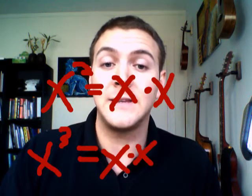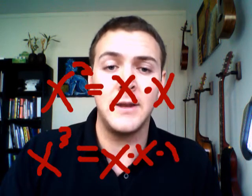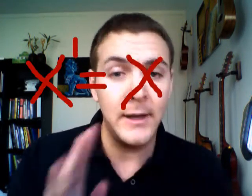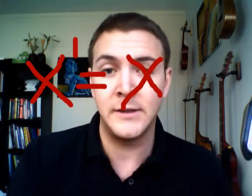Things get tough when we get into the wackier versions. First, a big rule: x to the one is always just x. It's always itself. Any number to the one is itself.